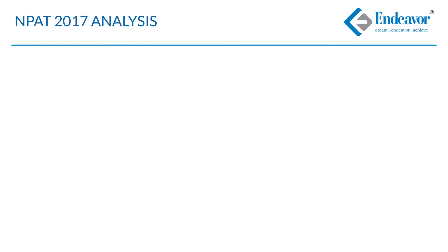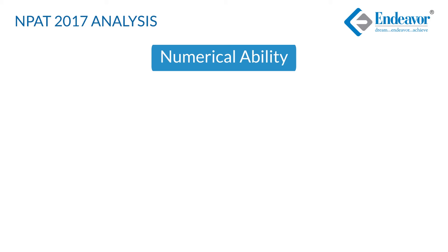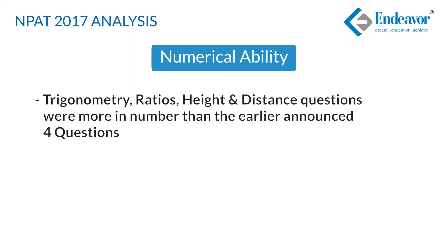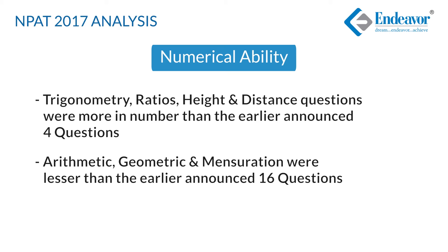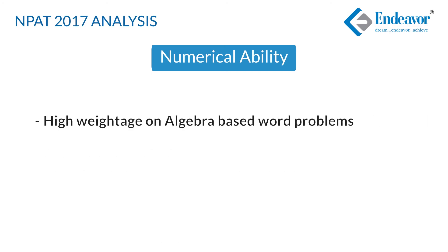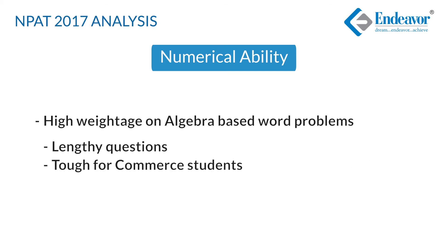Let us review each section one by one. In numerical ability, though the exam breakup mentioned there would be only four questions on trigonometry ratios and height and distance, many students observed the number of questions from these topics was much higher than four. Similarly, the breakup mentioned arithmetic and geometry or mensuration-based questions would be around 16 out of 40, but students complained it was less than 16. Another surprising element was the very high weightage on algebra-based questions, and most were lengthy word problems rather than direct equation-based questions. This would have disappointed students from commerce or those who had not opted for pure mathematics at the plus-two level.